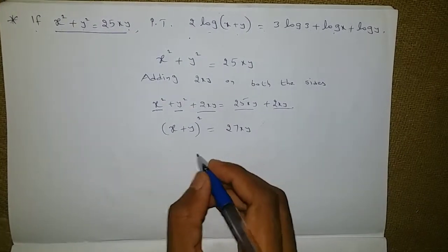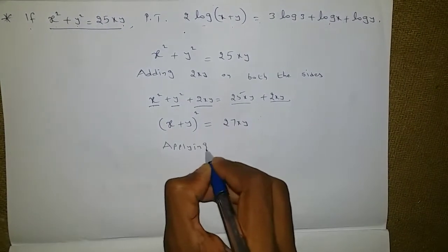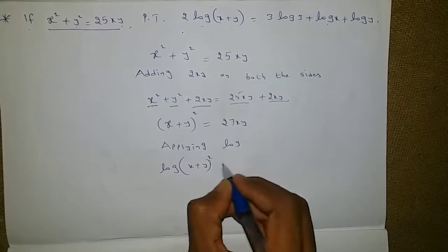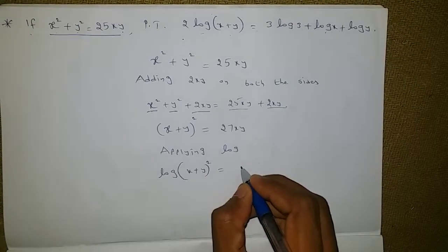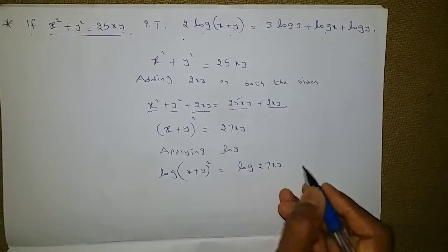I will apply log on both the sides. Applying log: log[(x+y)²] = log(27xy).